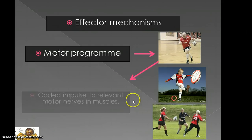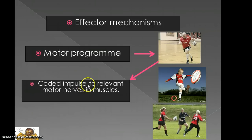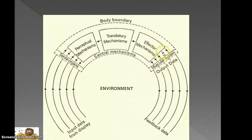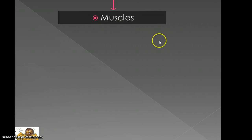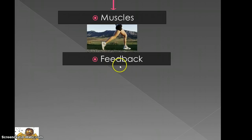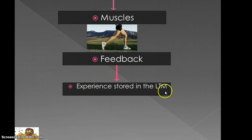The message is then sent into our effector mechanisms and coded to the relevant motor nerves within the muscles — that is what the effector mechanism actually achieves. After that, we're moving into our muscular system. The nerve endings send the messages to the muscular system and into the muscles, so as with our guy running, we'd be using our legs. From this, we receive our feedback — how effective was it? This new added experience is then stored into your long-term memory, ready for the next time this opportunity arises, so you can use that information once again to formulate the relevant decision.